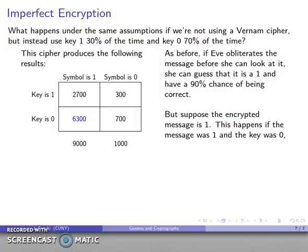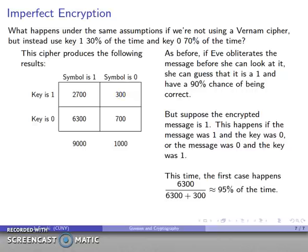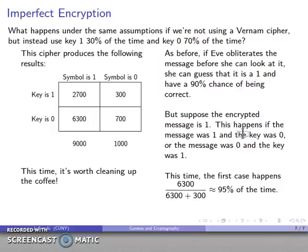But suppose she cleans up the coffee and discovers the encrypted message is 1. That can happen in one of two ways: either the symbol is 1 and the key is 0 (6,300 cases) or the symbol is 0 and the key is 1 (300 cases), for a total of 6,600 messages. Symbol 1 occurs 6,300 out of 6,600 times, which is about 95%. So with the extra information that the encrypted message is 1, her probability of being correct has increased from 90% to 95%. This time it was worth cleaning up the coffee — the ciphertext did give her extra information.